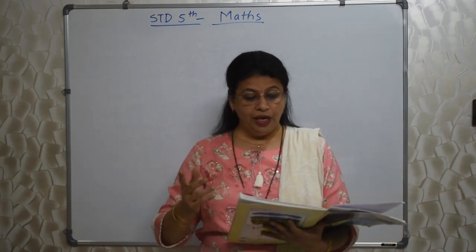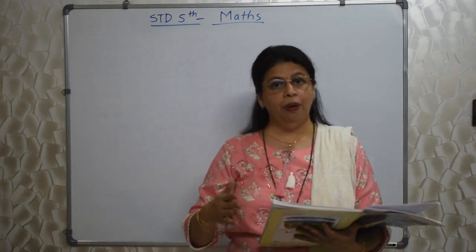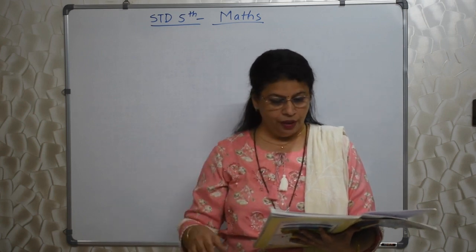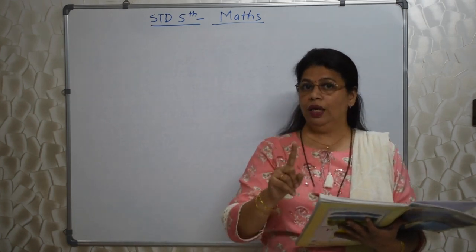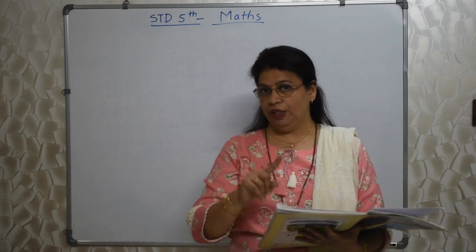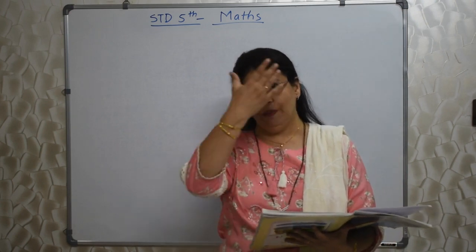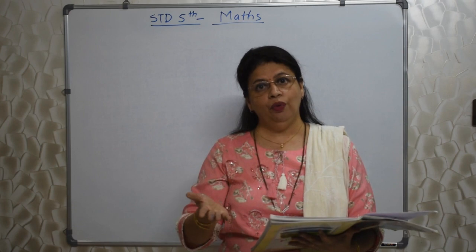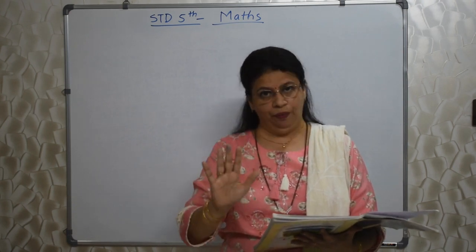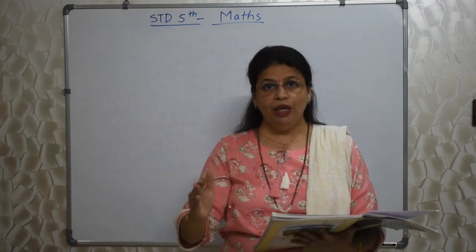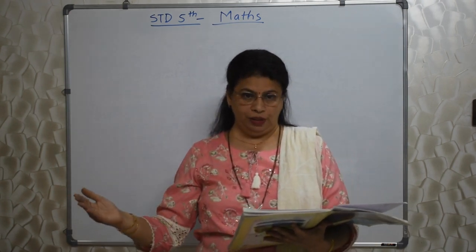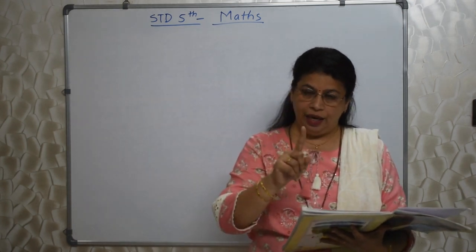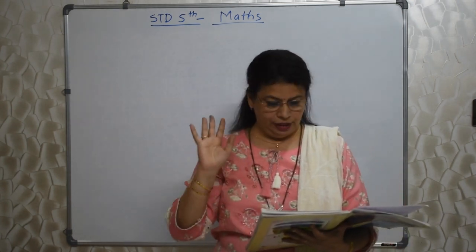Now face value, place value, expanded form — you all know, we are learning from 4th Standard. But you should know the concepts of face value and place value. Face value is the number as it looks — for example, 5; face value is always 5. Place value differs from place to place. My video is there again if you want to see.